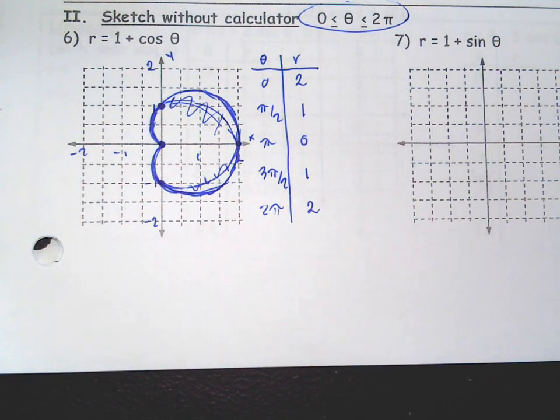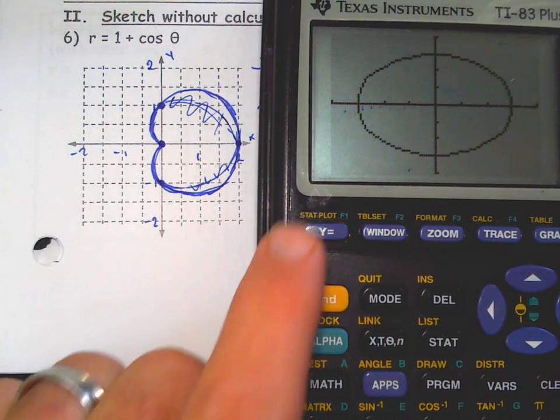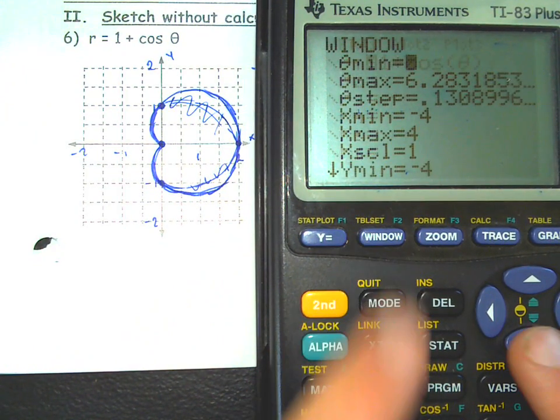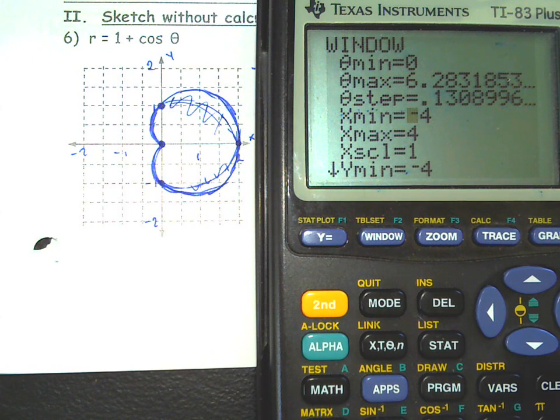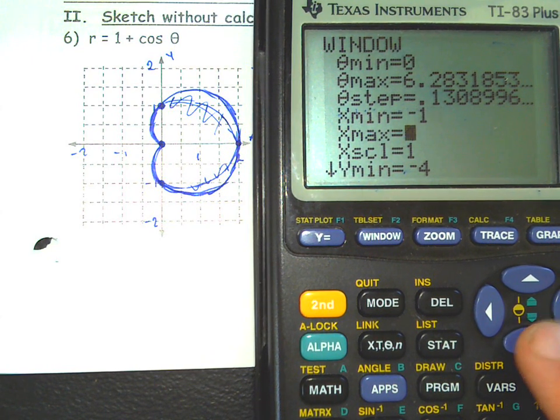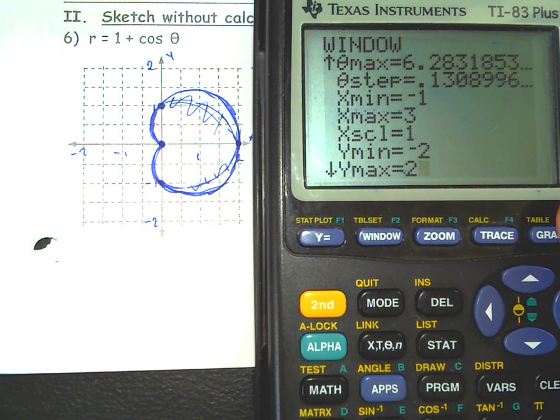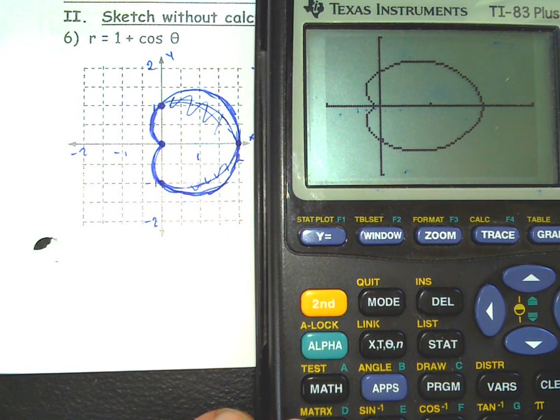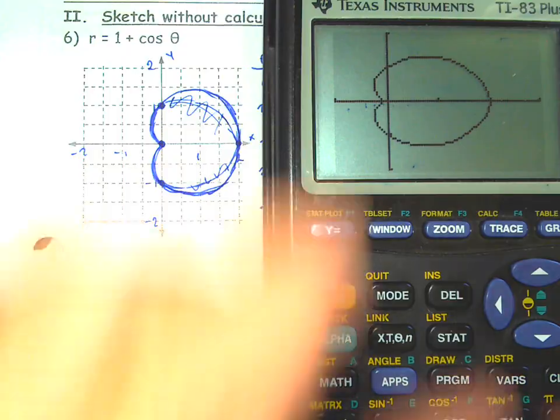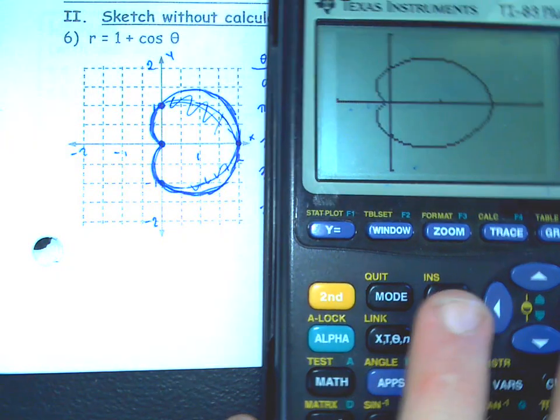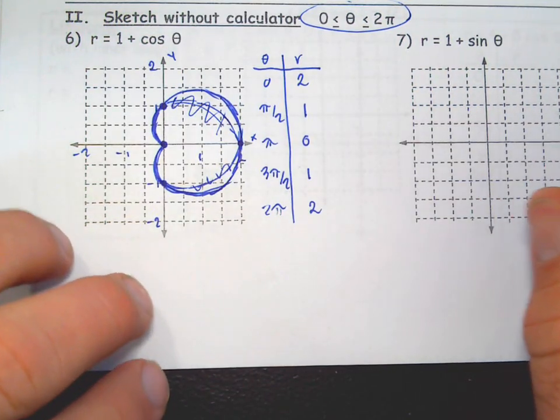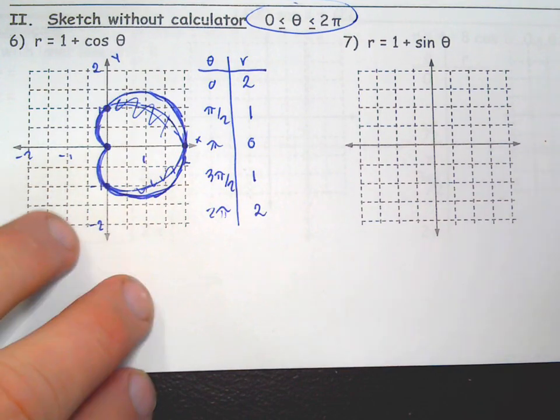And we could check that on your calculator. You could say 1 plus cosine theta in polar mode window 0 to 2 pi. I mean, from our sketch, I'm guessing negative 1 to 3 and maybe negative 2 to 2 would be a good window. And there you go. So you can see it's very rounded. It looks a little more stretched out this way. That's just because the window is not square. Even though the window I chose is technically square.